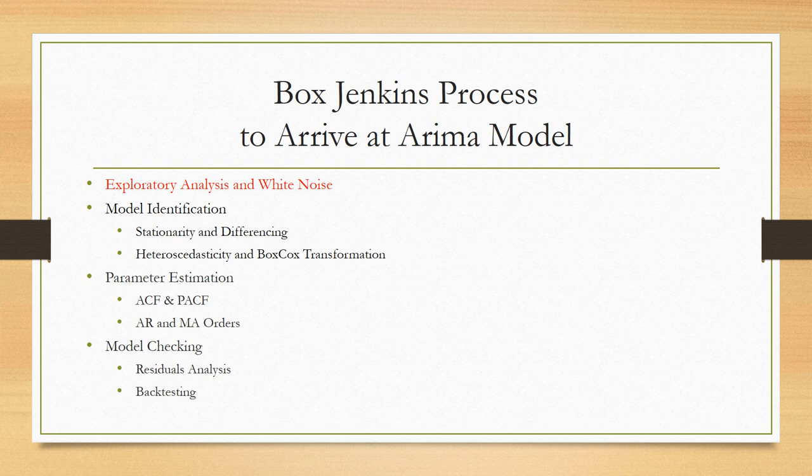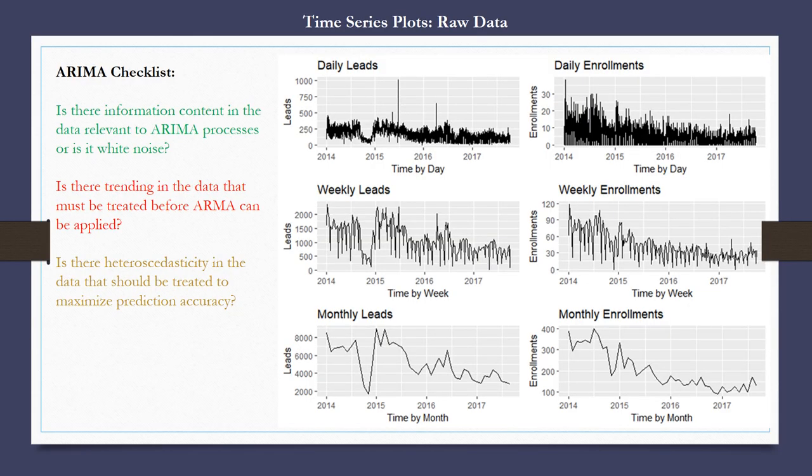The structure of this presentation will walk through the Box-Jenkins process to arrive at the ARIMA model for our data. We'll start with exploratory analysis and the topic of white noise, then move to model identification, parameter estimation, and model checking. Visualization is a key part of the ARIMA process throughout. ARIMA modeling and the Box-Jenkins process, unfortunately, is as much art as it is science.